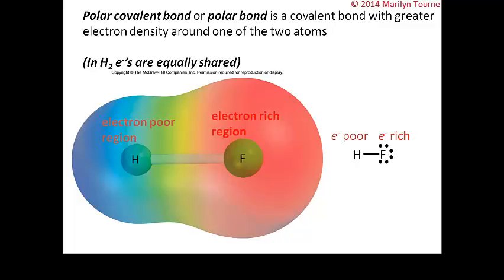So we have three categories: ionic compounds, nonpolar covalent compounds like H₂ where electrons are shared equally, and polar covalent compounds like hydrogen fluoride where there is unequal sharing of electrons. We're now going to learn how to distinguish between polar and nonpolar covalent bonds.